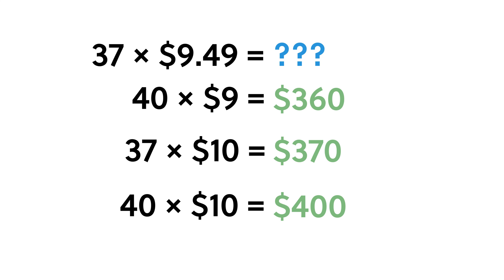Keep in mind that this list of estimates is not exhaustive — you might come up with an estimate that is different but still valid and useful. All these estimates are reasonably close to the exact value of 37 times $9.49, which equals $351.13.